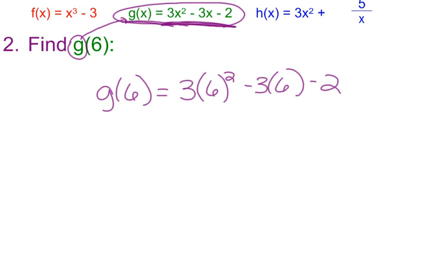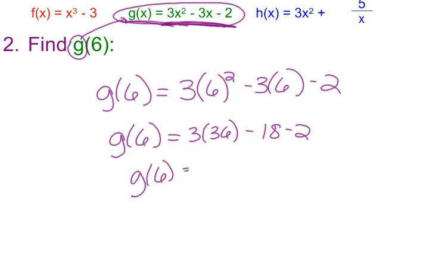From here now, I need to use my order of operations to simplify. So my g(6) stays the same. Again, that's labeling what they're asking us to find. Using my order of operations, I know that I would do exponents first. So I would have 3 times 36 here, minus 18, minus 2. When I actually take 3 times 36, I'd get 108, minus 20. So g(6) equals 88.